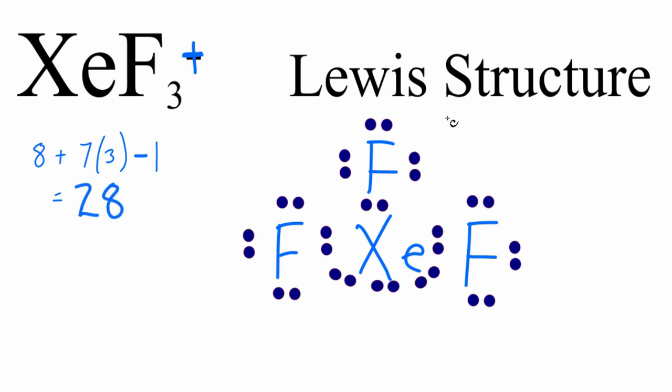That means essentially in this Lewis structure here for the XeF3-, we're just going to take and get rid of a pair of valence electrons. How about these right here? And then I'll adjust the electrons to make it look a little nicer.